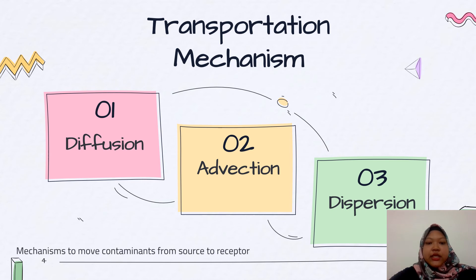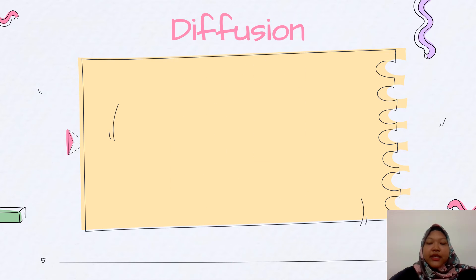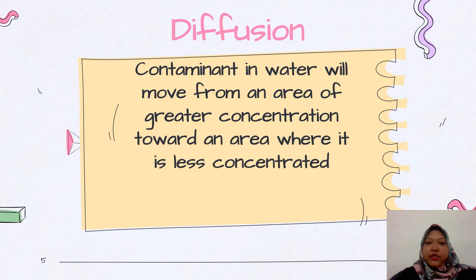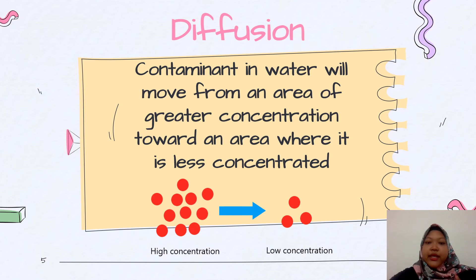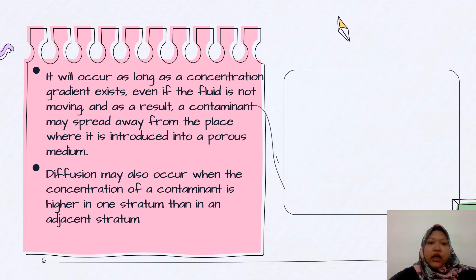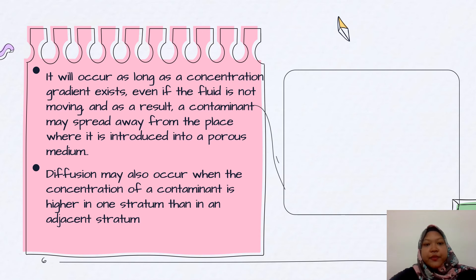This mechanism is used to move the contaminant from source to receptor. The first one is diffusion. Diffusion is when a contaminant in water moves from an area of higher gradient concentration towards an area where it is less concentrated. It will occur as long as the concentration gradient exists, even if the fluid is not moving. As a result, the contaminant is spread away from the place where it is introduced into a porous medium.